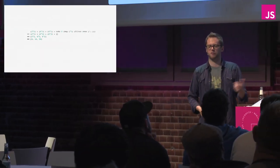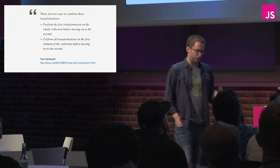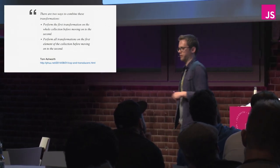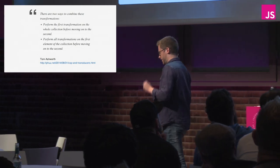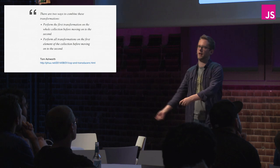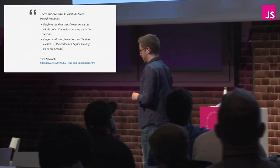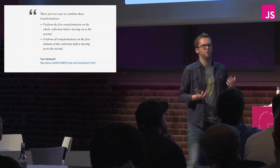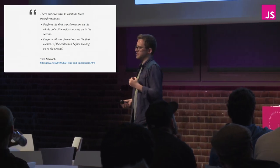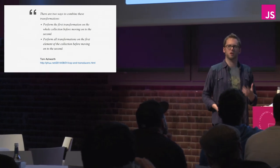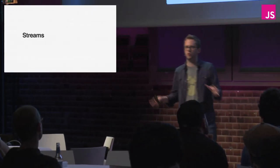Tom Ashworth sums this up: there are two ways to combine transformations — you can perform the first transformation on the whole collection before moving to the second, or you can perform all transformations on the first element before moving to the second. The first is how JavaScript handles arrays; the second is how Haskell handles them. There's nothing inherent to the data structure forcing one strategy. And just as Haskell deals with lists as though they were streams, we could deal with streams as though they were lists. Streams are a huge part of Node programming — really Node's core feature.